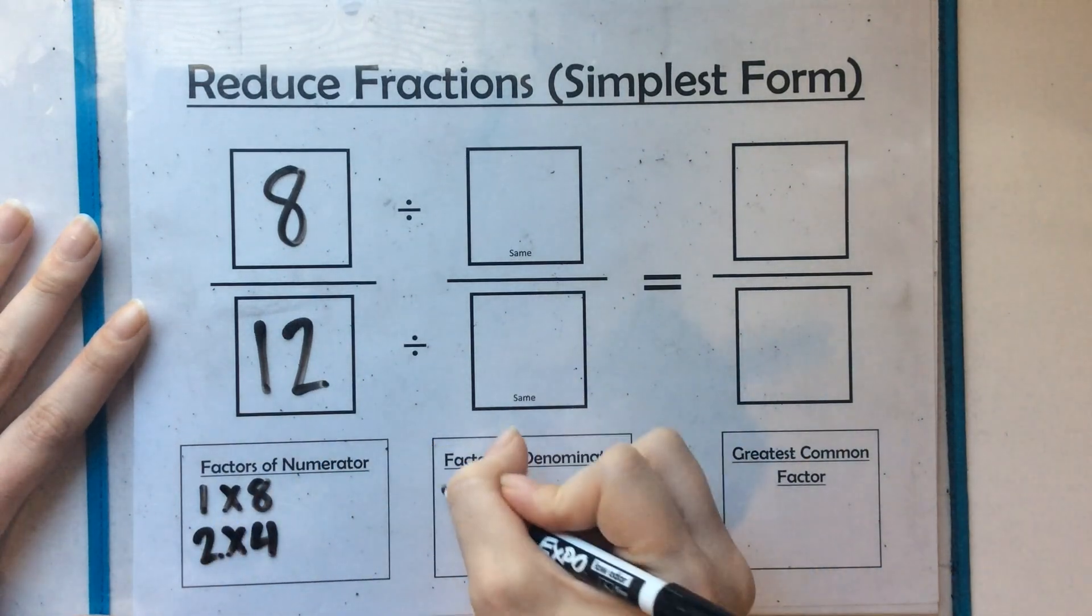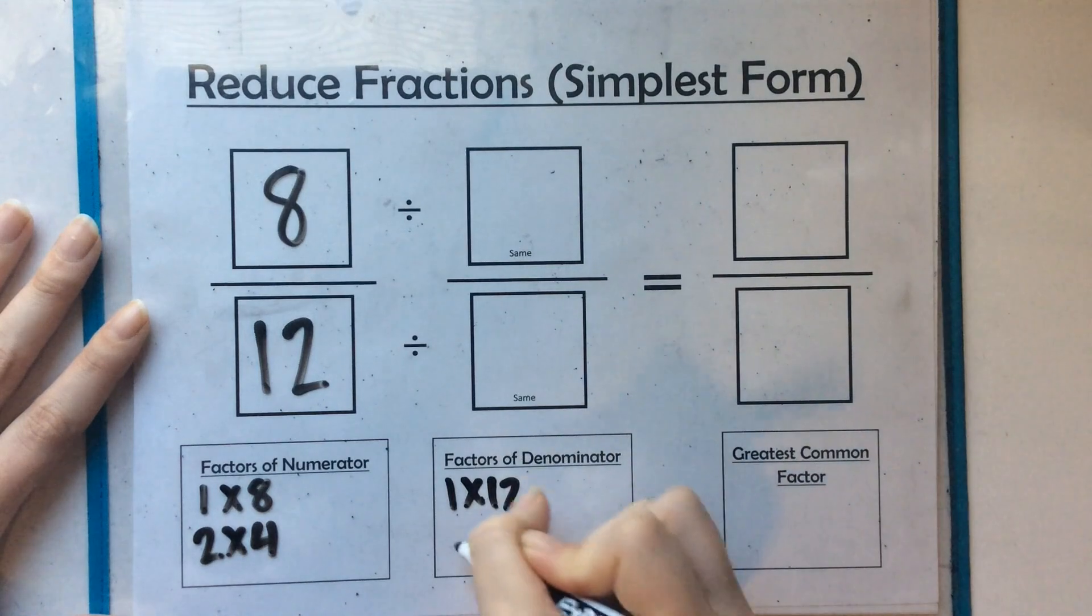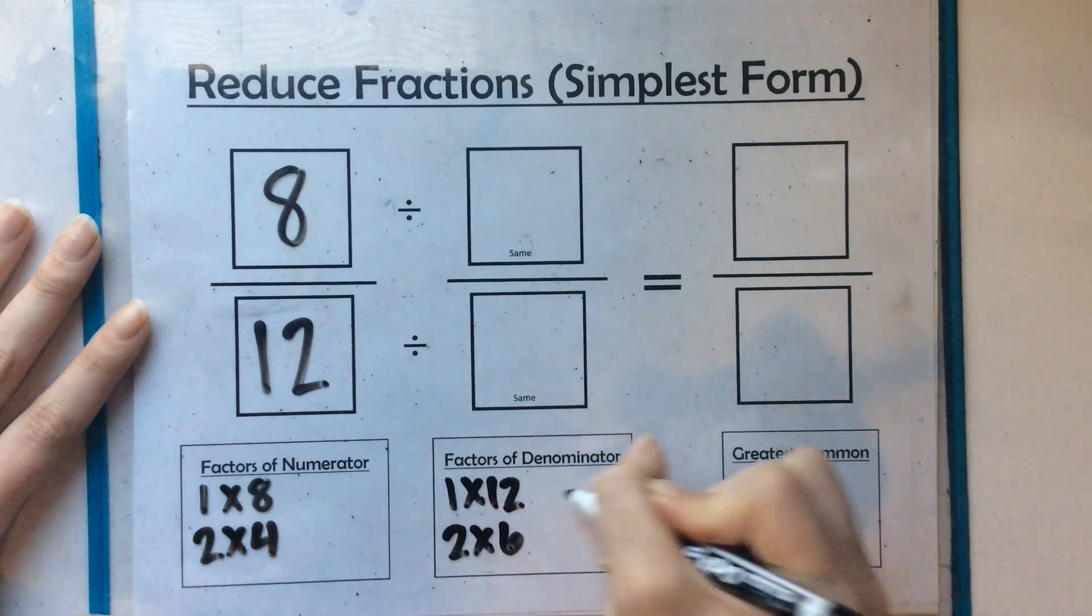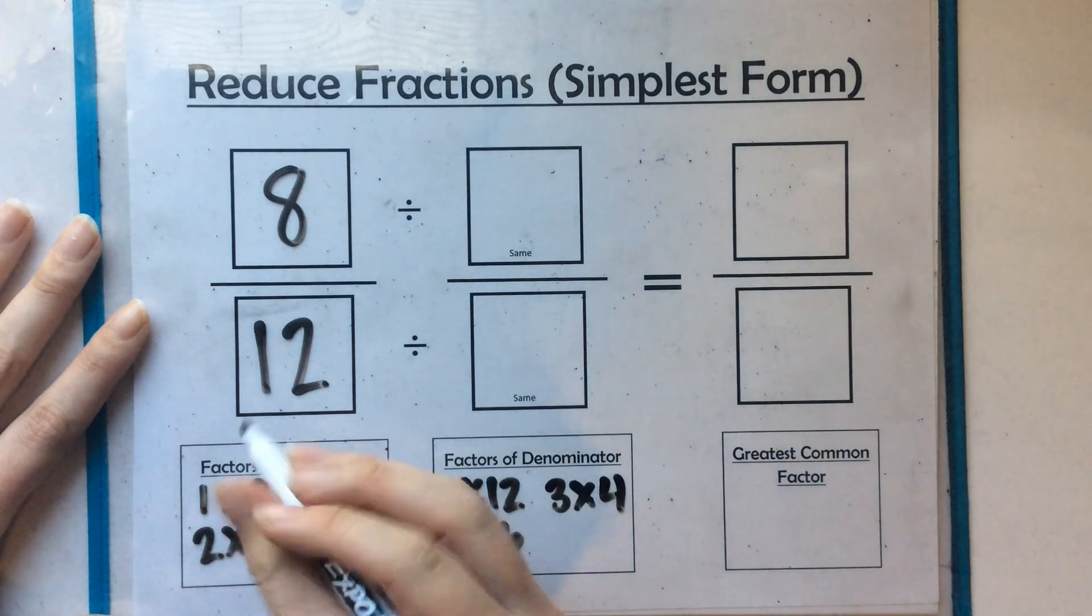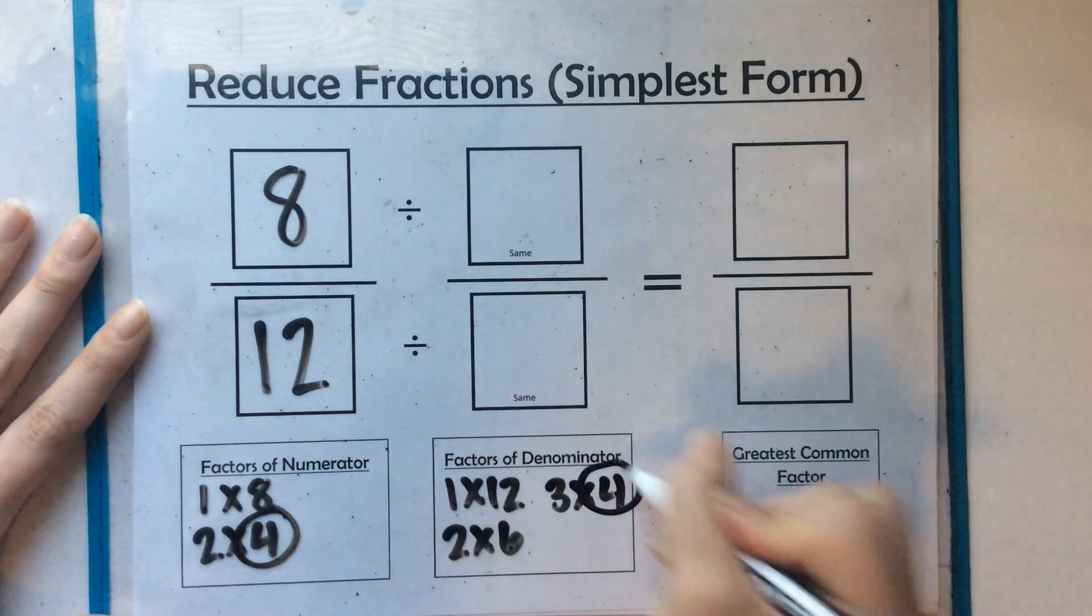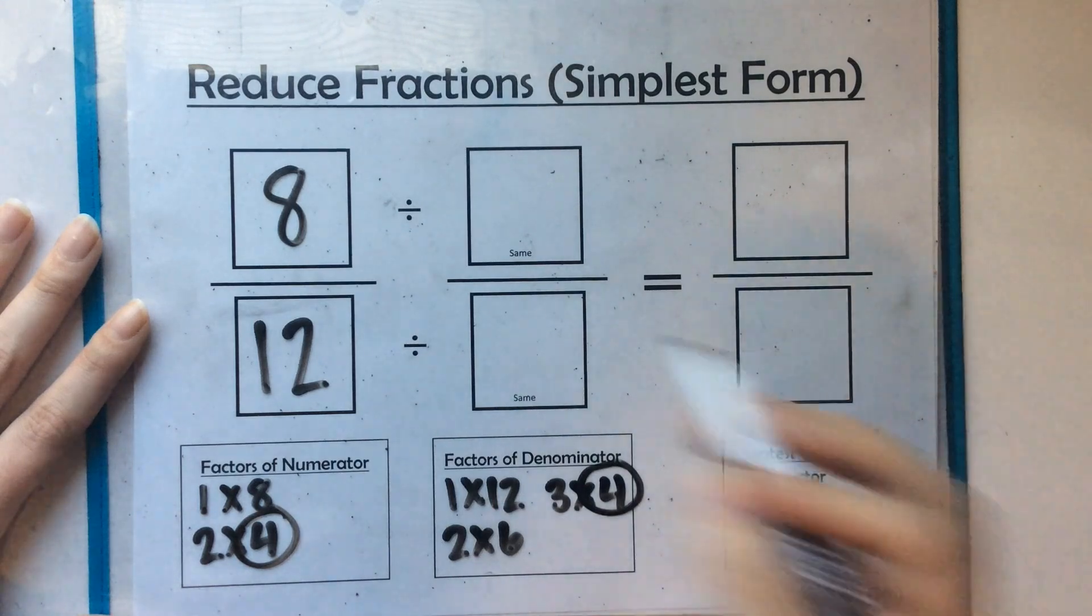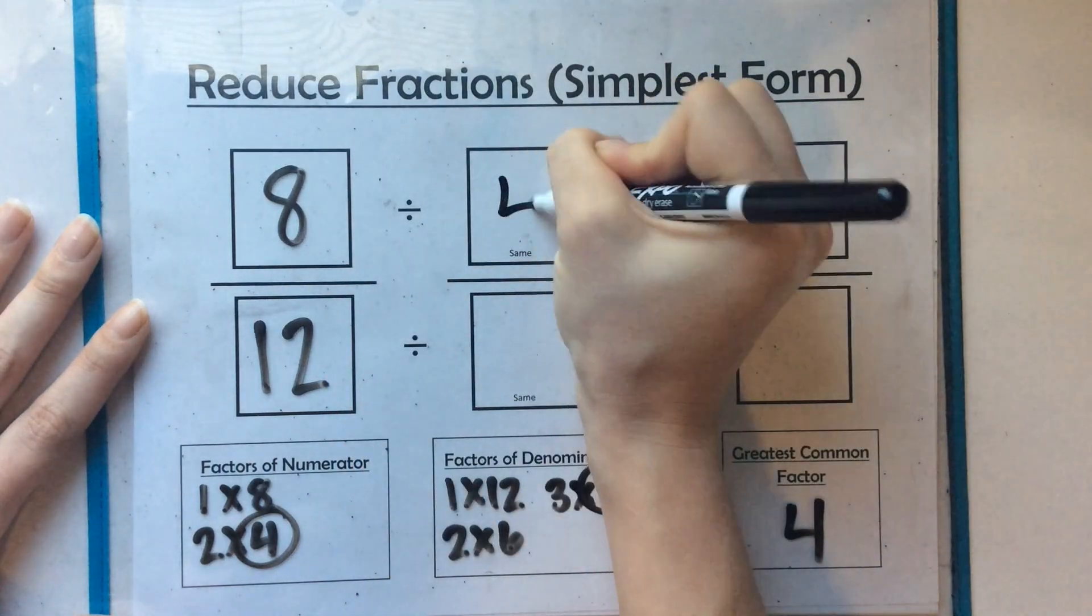12's factors are 1 times 12, 2 times 6, and 3 times 4. So I see that my greatest common factor here is 4. So I can divide 8 and 12 by 4.